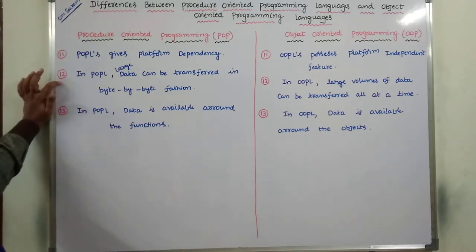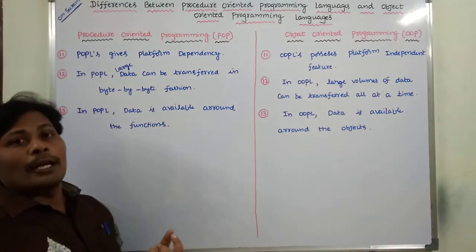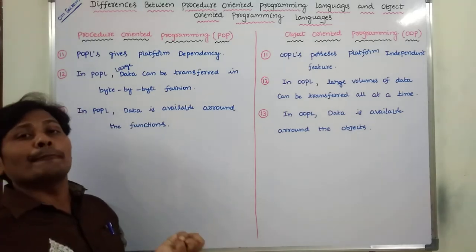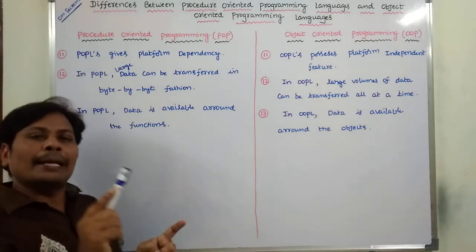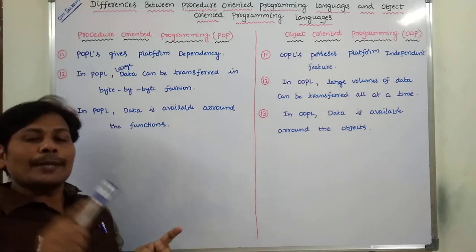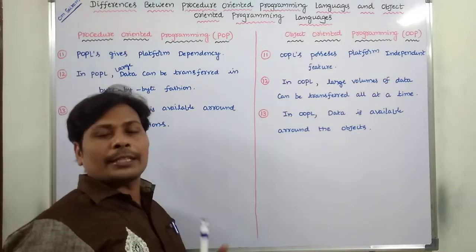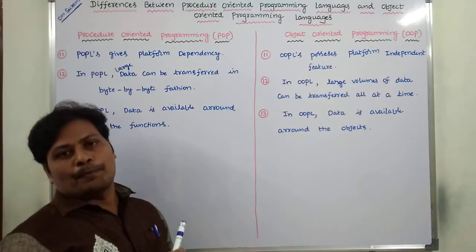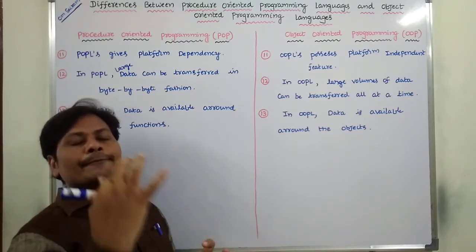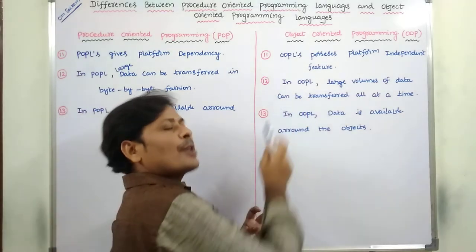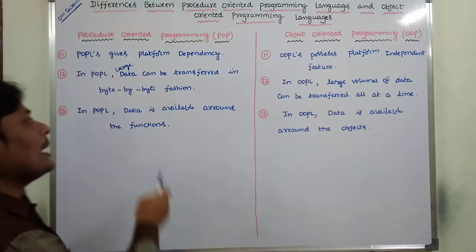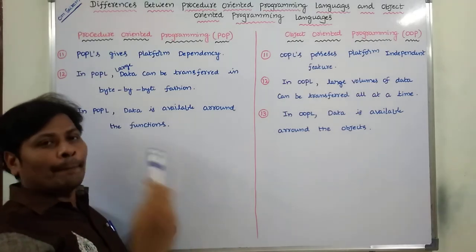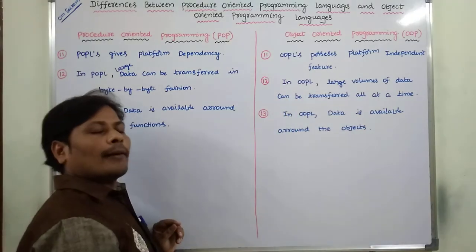Another difference: in Procedure Oriented Programming Language, large data can be transferred from client to server only byte by byte. Whereas in Object Oriented Programming Language, large data can be transferred all at once — all the data can be transferred from client to server at a time.